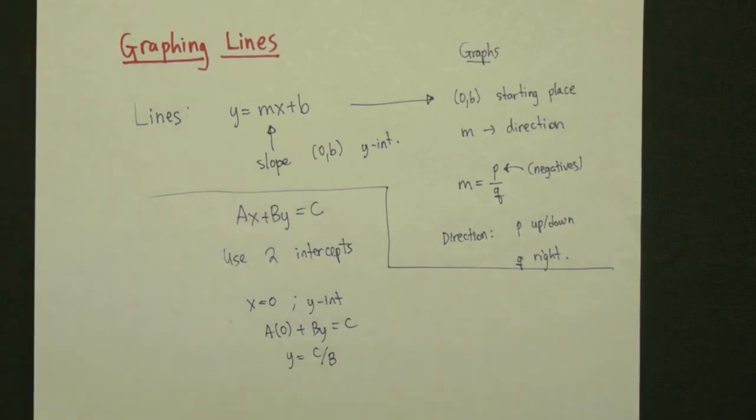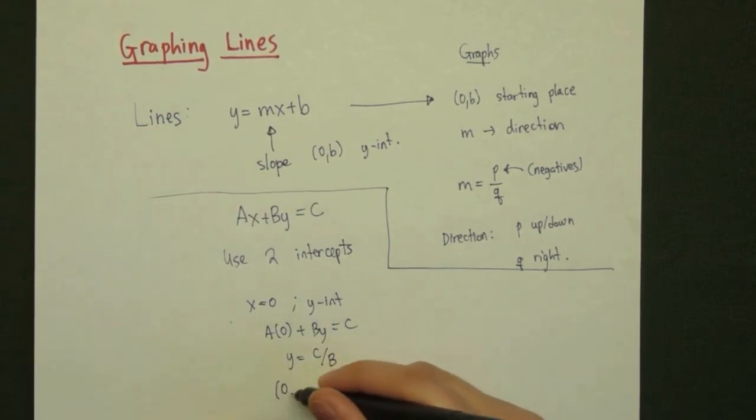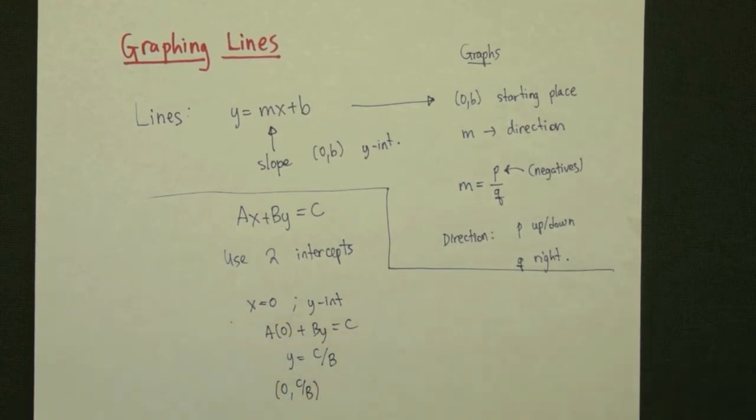That means that the y-intercept is an x value of 0, a y value of that number, c over b.